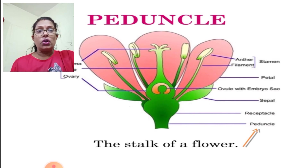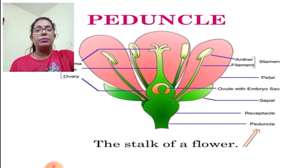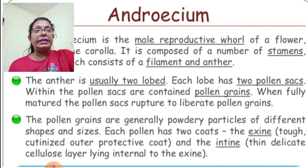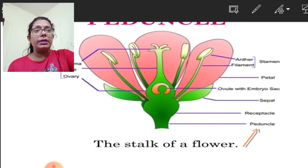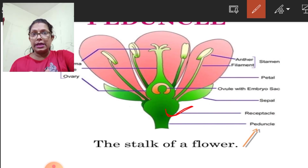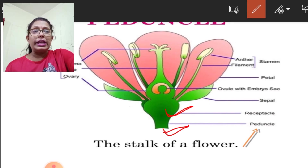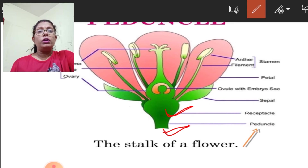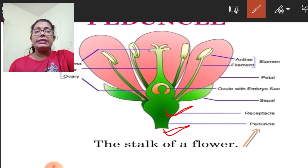The stalk of the flower is called the peduncle. The peduncle widens at the top to form the receptacle — as clearly visible in the diagram. The receptacle is the broad platform on which all the floral parts are arranged, located just above the peduncle.